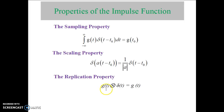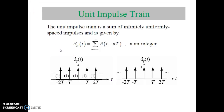Next is the replication property: if you multiply g(t) with delta(t), the result is g(t). So any signal multiplied with delta(t) gives the same original signal. Next is the Unit Impulse Train: it is the sum of infinitely uniformly spaced impulses, given as delta_T(t) equals the summation from n equals minus infinity to plus infinity of delta(t minus nT), where n is an integer and T is the separation between samples.